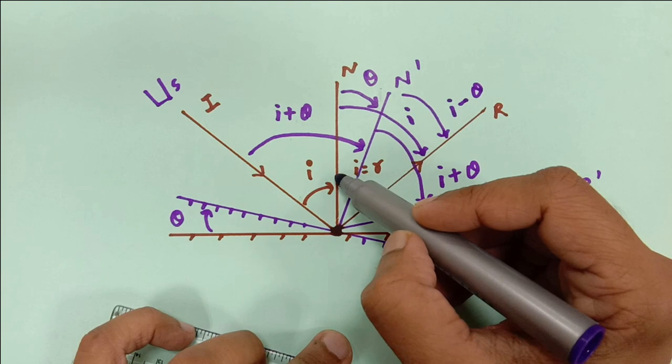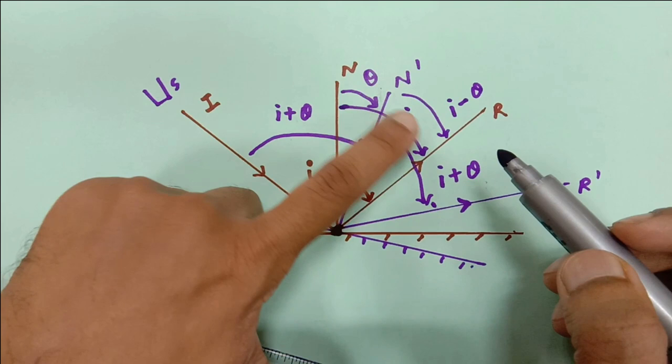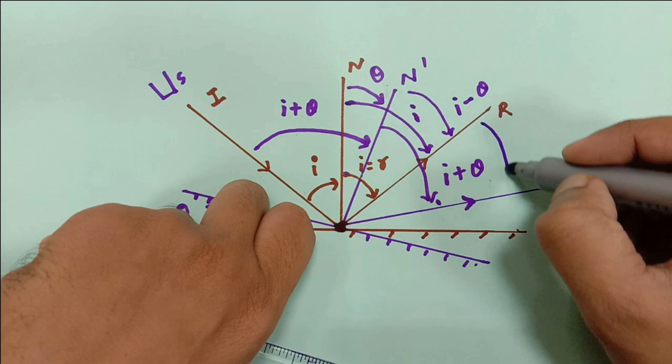...I minus theta. This angle is I, the same angle is I over here, this angle is theta, so the whole angle minus theta gives I minus theta.